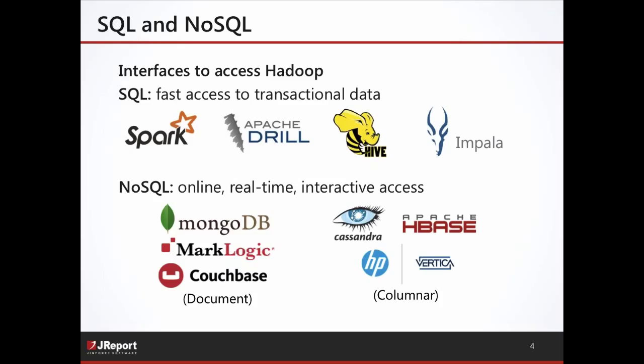Column-based NoSQL databases include Cassandra — an open-source technology with support from Datastax — and Apache HBase, which is actually part of Hadoop and very well integrated within it. HP with their acquisition of Vertica provides another column-type database with NoSQL access. Customers are often using NoSQL databases side-by-side with Hadoop. Think of Hadoop as the newer data warehouse for offline batch data, and NoSQL as the new relational database for online, real-time interactive access.